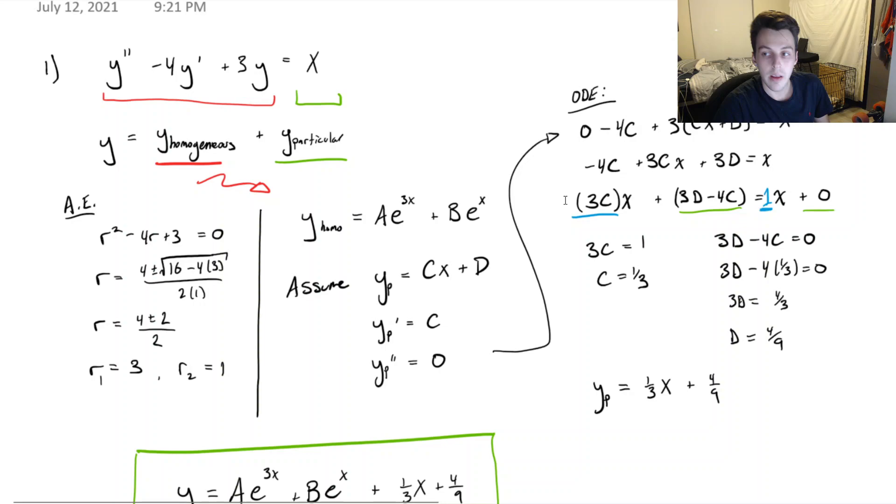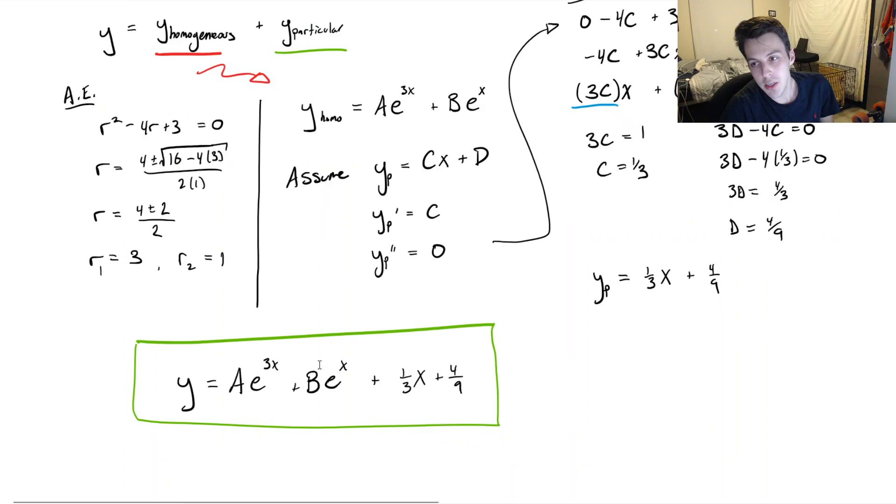And if we wanted to find A and B, we would just need some initial conditions for this ODE. And that's pretty much just straightforward math at this level. You just plug them in. You'll have a system of equations.